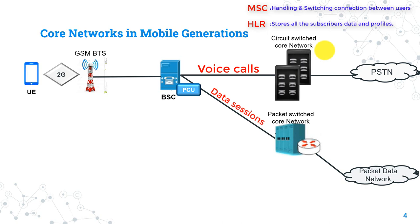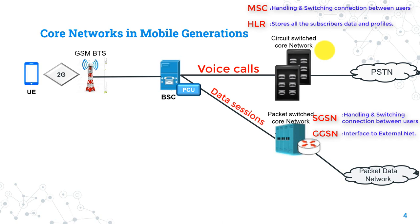The main nodes in the packet switching core are the SGSN, Serving GPRS Support Node, whose main function is similar to the MSC — switching and handling connections between users. The second node is GGSN, Gateway GPRS Support Node, which enables packet switching users to connect with external packet data networks like the internet. So from its name, it is the gateway to the internet and other packet data networks.